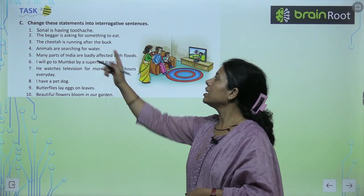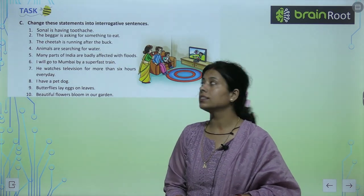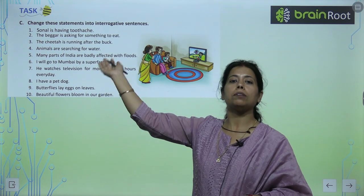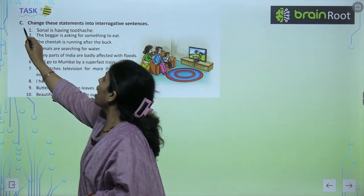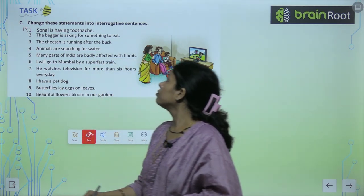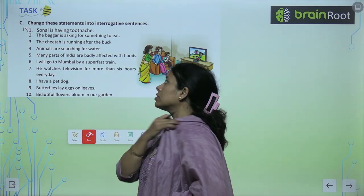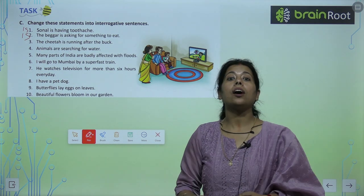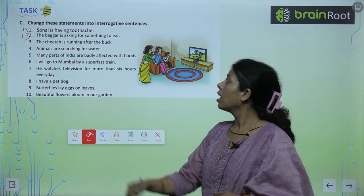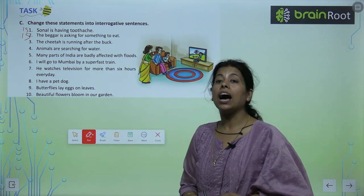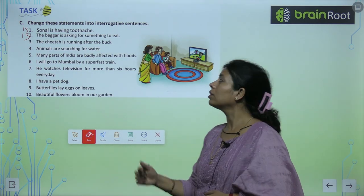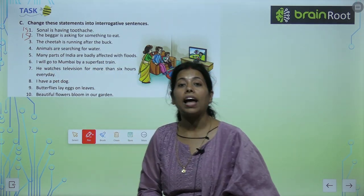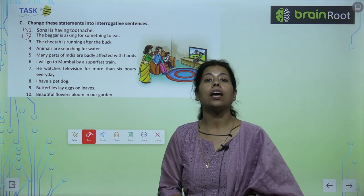Let's start the task: Change these statements into interrogative sentences. 'Sonal is having a toothache' — subject से पहले 'is' लगा दिया → 'Is Sonal having the toothache?' 'The beggar is asking for something to eat' → 'Is the beggar asking for something to eat?' 'The cheetah is running after the bug' → 'Is the cheetah running after the bug?' 'The animals are searching for water' → 'Are the animals searching for water?' तो subject से पहले is या are आ जाएगा।